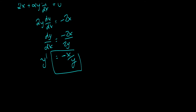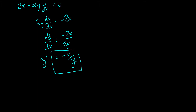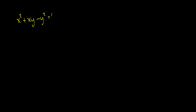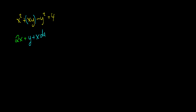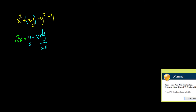I'm going to show you another example, a little bit more complicated. We have x squared plus xy minus y squared is equal to 4. We take the derivative of the left side: the derivative of x squared is 2x, plus the derivative of xy — this is a product, so we apply the product rule: the derivative of x, which is 1, times y, plus x times the derivative of y.